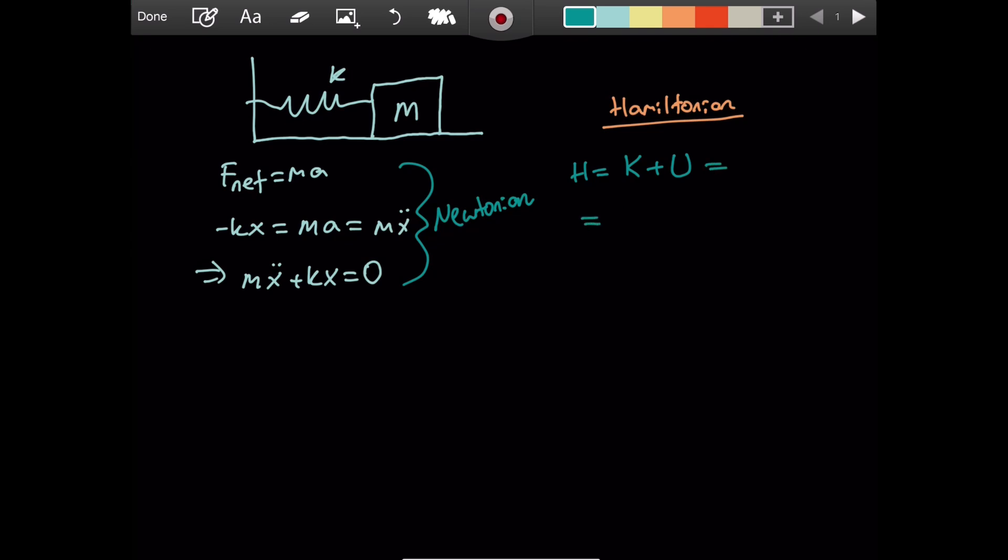What is the kinetic energy? It is simply one over two mv squared. V here is the speed of the mass. Plus, since this is a Hookean spring, the potential energy will be one over two kx squared, where x is the displacement from the equilibrium position. Hamiltonian focuses on momentum and position. It doesn't really focus on velocity. So why don't we just get rid of this velocity?